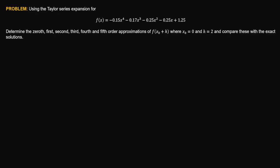Next problem: using the Taylor series expansion for this polynomial, determine the 0th, 1st, 2nd, 3rd, 4th, and 5th order approximations of f(x₀ + h) where x₀ = 0 and h = 2, and compare with the exact solutions. So h = 2 as provided, and x = 0 — meaning we will use the Maclaurin series. Then h = 2.